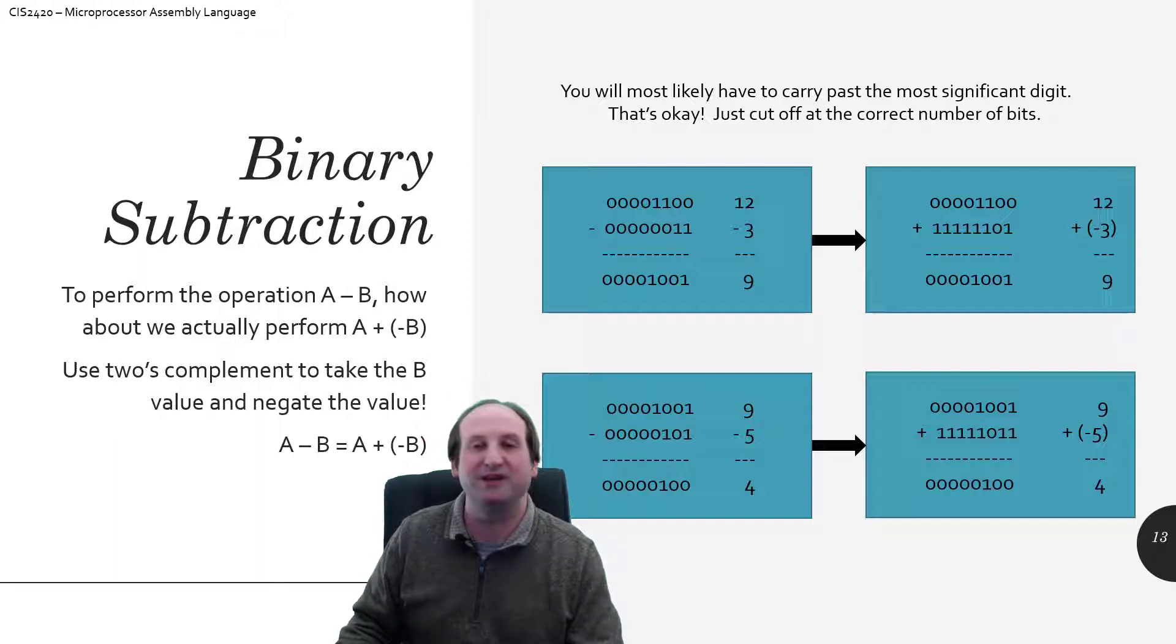So if I take my 12 minus 3 and I turn it into 12 plus negative 3, what result do I get? Do the two's complement, and that 00000011 becomes 11111101. And then you take that 12 and you add it to the two's complement result of the negative 3, and what do you get? And again, that carry bit's going to fall off, but the result of all of that is 00001001, which is the 9 that I'm expecting to see.